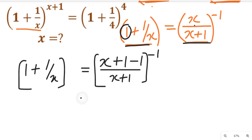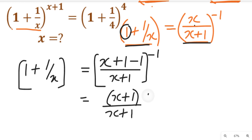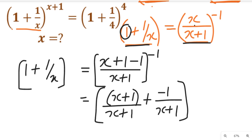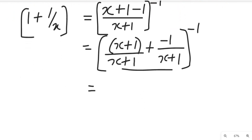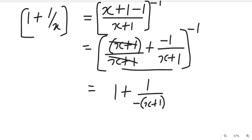We are heading toward having an equation like this. So we separate this part: we'll have it divided by x plus one, plus minus one divided by x plus one, all raised to the power of minus one. If you simplify this whole expression, this will equal one plus one divided by x plus one — with the negative sign — all to the power of minus one. You can now see that this equation is now similar to the target form.